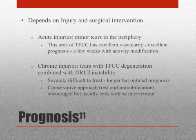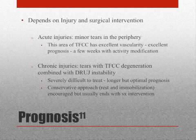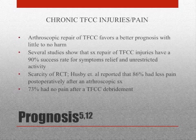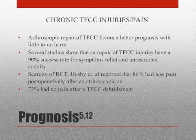The prognosis of TFCC injuries depends on the severity of the injury and the chosen interventions. Acute injuries, defined as tears in the periphery, generally have a shorter prognosis due to excellent vascularity. Conversely, chronic injuries accompanied by DRUJ instability and degeneration often lead to a more complex prognosis and usually end up requiring surgery. Arthroscopic repair of the complex favors the best prognosis — it is the safest and causes the least harm. Several studies report a 90% success rate, and 70–85% of patients with chronic TFCC injuries report no pain after arthroscopic management.